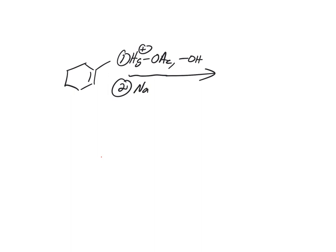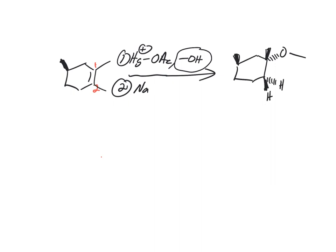Let's look at the actual oxymercuration mechanism in detail. Label the carbons in the pi bond 1 and 2, and add an extra stereocenter to help clarify. We know this adds anti. We also know that the solvent in this case is methanol, so it ends up on the more substituted carbon. It must be trans to whatever we add. We label the original H on carbon 2 as HA, and the one we're adding as HB from BH4.